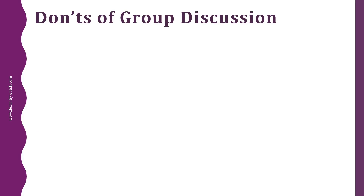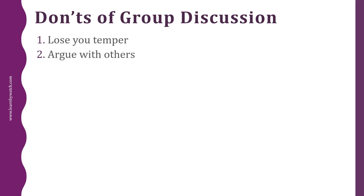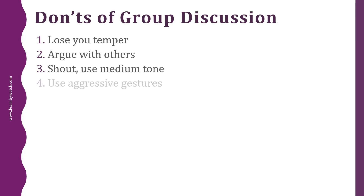Now the don'ts of group discussion. First: don't lose your temper while speaking, as it shows your inability to work in a team. Second: don't argue with others — it shows you are narrow-minded and don't respect others' opinions. Third: don't shout — always use a soft and medium tone while speaking. Fourth: don't use aggressive gestures, as it shows bad body language and makes you look arrogant. If you disagree with someone, express your feelings calmly and politely.